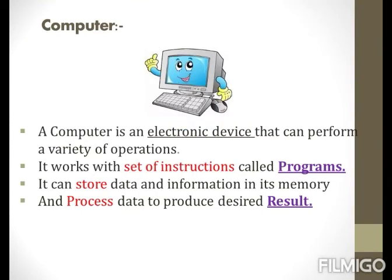Now let us do a quick revision on what is a computer. A computer is an electronic device that can perform a variety of operations. A computer works with a set of instructions called programs. A computer can store data and information in its memory, and can also process that stored data to produce a desired result.